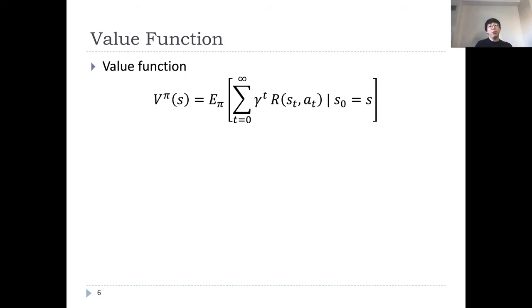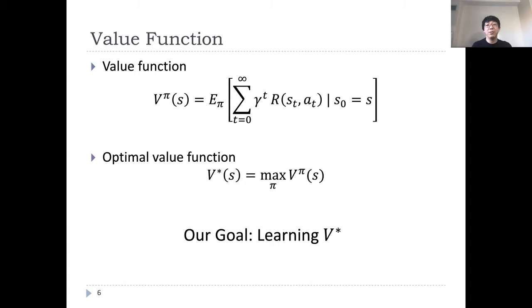In this case, a policy π maps state S to an action. A fundamental quantity of interest in reinforcement learning is the value function. Given a policy π, the value function is defined as a discounted cumulative reward under that policy. Often, we are interested in the optimal value function, that is, the value at each state if one follows optimal reward maximizing policy. In this talk, we focus on value-based reinforcement learning, and our goal is to learn the optimal value function V*.